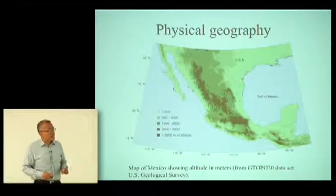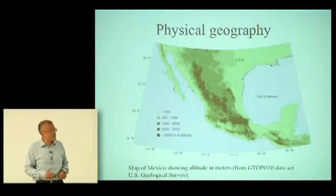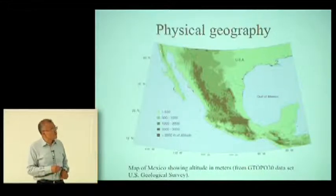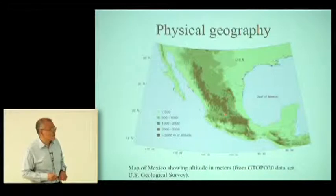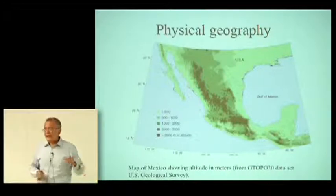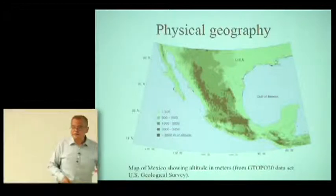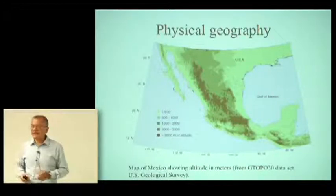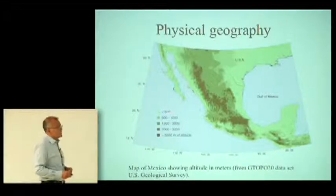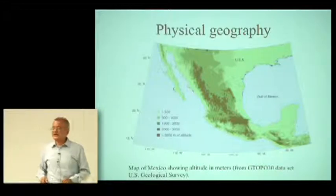I want to talk a little about the physical geography of Mexico. Mexico lies between about 15 and 32 degrees north — Mexico City is here, Ensenada where I come from is here, and Guanajuato is somewhere here. Because of its latitude, Mexico should be a tropical or subtropical country, but because of the altitude, most of the country is rather a temperate region. Most of the country is above 2,000 meters — in Guanajuato I heard it's just above 2,000 meters.